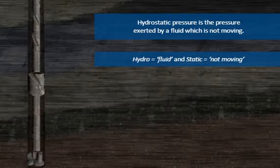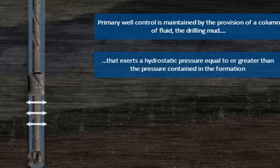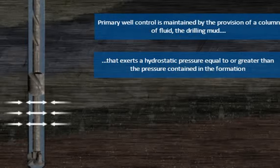Hydrostatic pressure is critical to well control. As we have already learnt, primary well control is maintained by the provision of a column of fluid, the drilling mud, that exerts a hydrostatic pressure equal to or greater than the pressure contained in the formation.